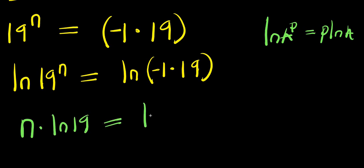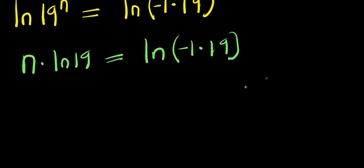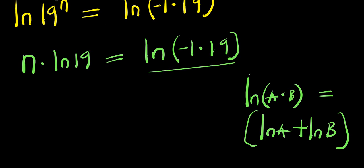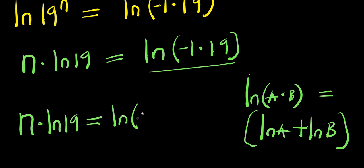This equals natural log of negative 1 times 19. Using the identity that natural log of a times b equals natural log a plus natural log b, we have n times natural log 19 equals natural log of negative 1 plus natural log of 19. Here negative 1 is a and 19 is b.